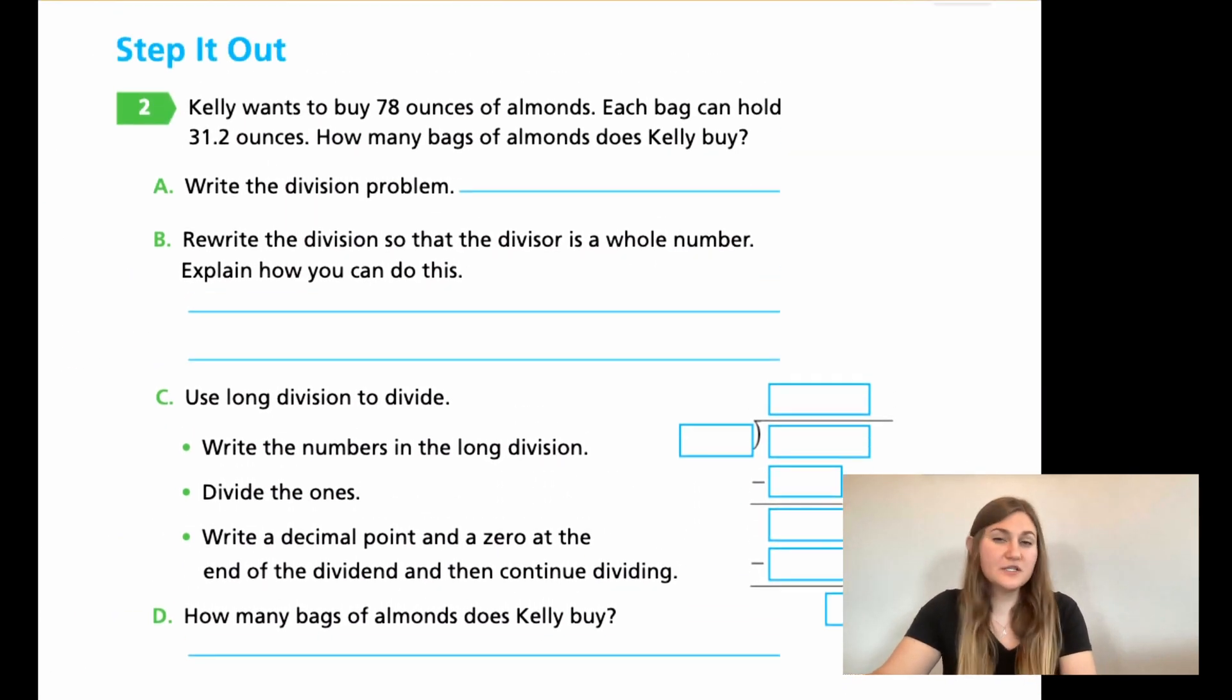Let's go ahead and flip the page. Now we're going to do number two. So pretty much the same work, just a different problem. So number two says, Kelly wants to buy 78 ounces of almonds. Each bag can hold 31.2 ounces. So how many bags of almonds does Kelly buy? Please don't be confused by this. The 78 is the larger number, even though it doesn't have as many digits. The 31.2 is still the smaller number, even though it has three digits in the number. So you want to be writing a division problem. Make sure that larger number goes first.